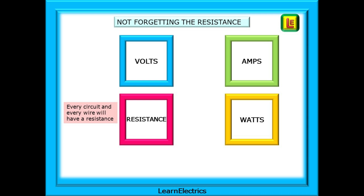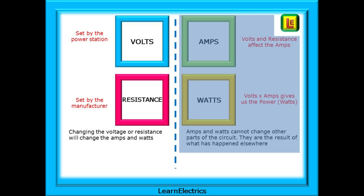We mustn't forget about the resistance in the circuit or the electrical wire that is carrying the current. In this video we don't need to know the resistance to find the amps, but it is there and is covered in detail in other videos. There are two halves to this slide. On the left are circuit parameters that are set by others, and those things that are a result of what happens on the left-hand side are shown on the right side of this slide.